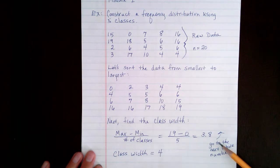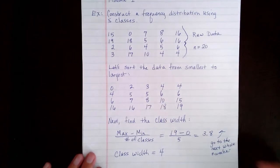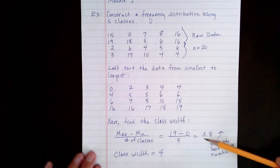I want to make a remark here that this is not rounding. You're going up to the next whole number always. Even if this was 3.2, you would use 4 as your class width. Even if this had been 3, you would go to 4 for your class width.